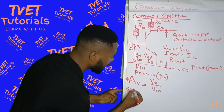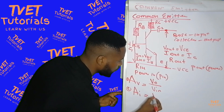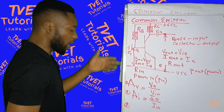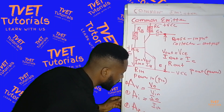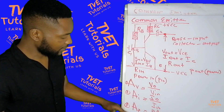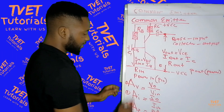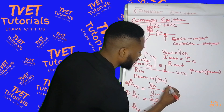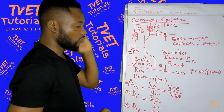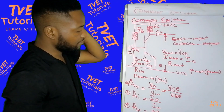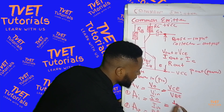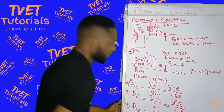The second equation is current gain, written as A_I, which is equal to I_out over I_in. Third is power gain, A_P, which equals P_out over P_in. For a common emitter amplifier: voltage gain A_V equals V_CE divided by V_BE; current gain A_I equals I_C divided by I_B, since I_C is the output current and I_B is the input current.